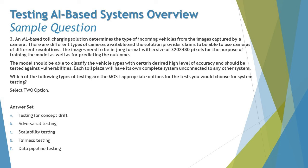Option C — scalability testing — is not relevant here. Scalability or performance requirements are not mentioned, and the scenario clearly states each system is independent and not connected to any other system, so there is no load concern. Option D — fairness testing — is not relevant either, because there is no case of positive discrimination in this scenario, which is what fairness testing addresses.